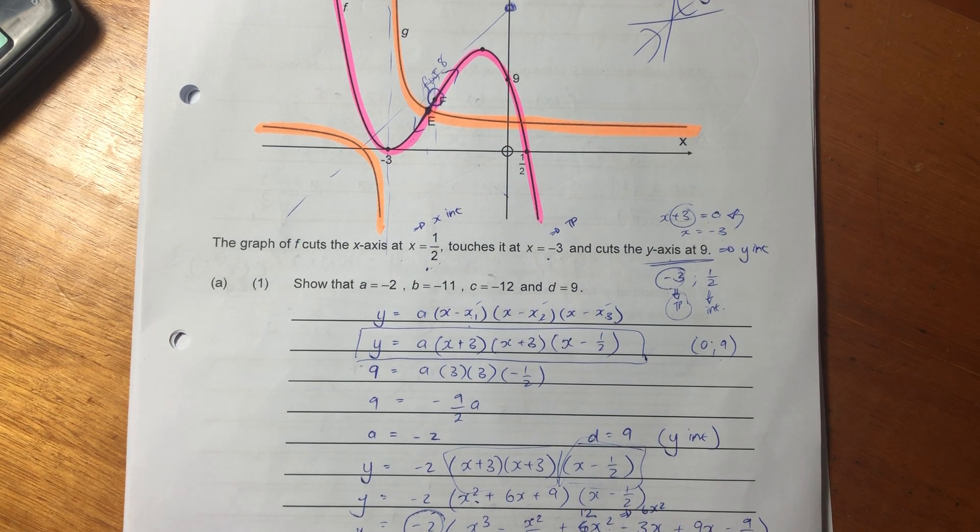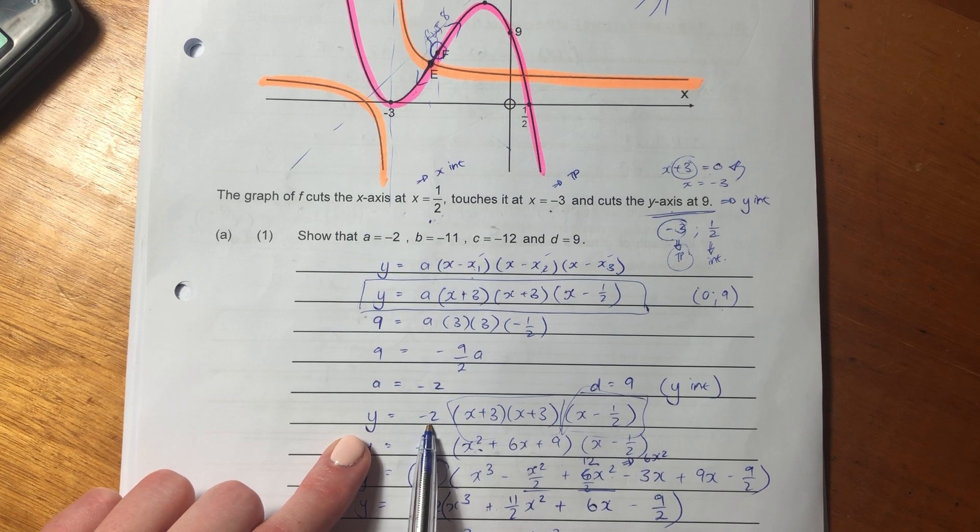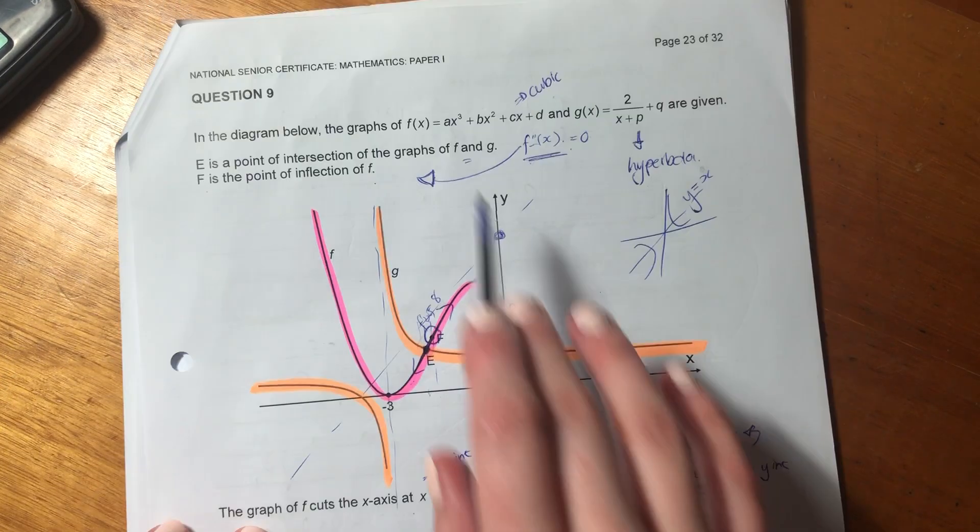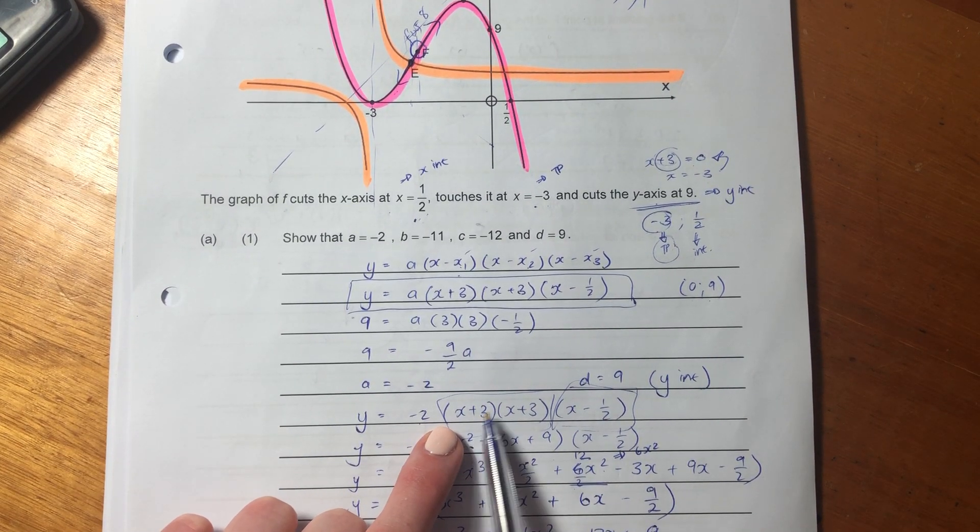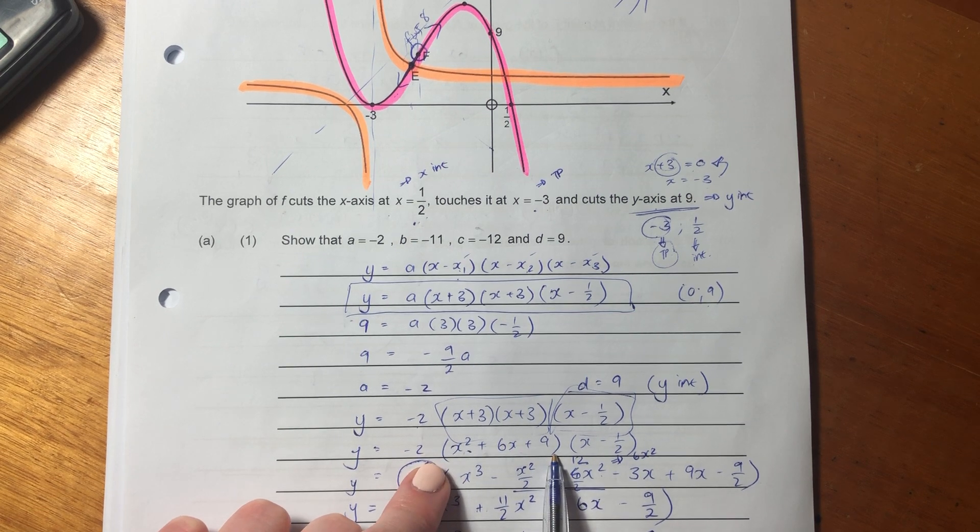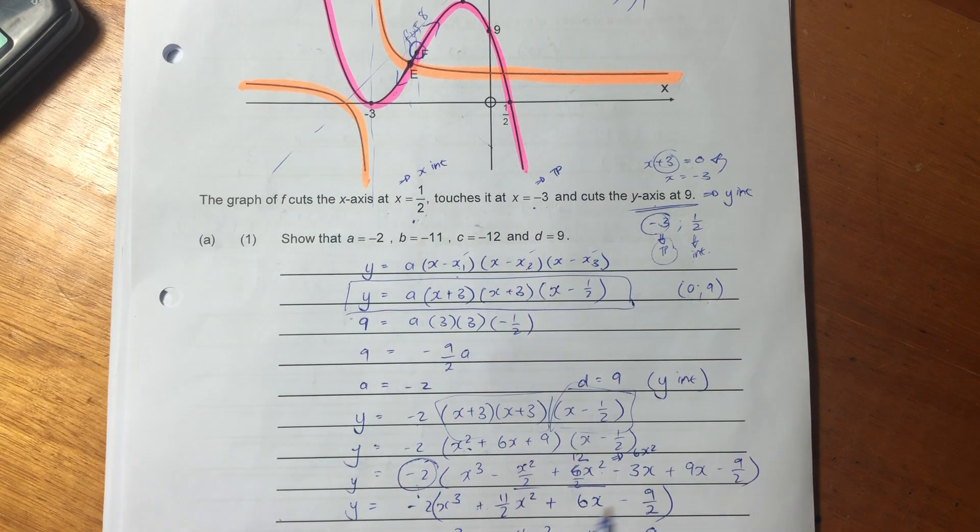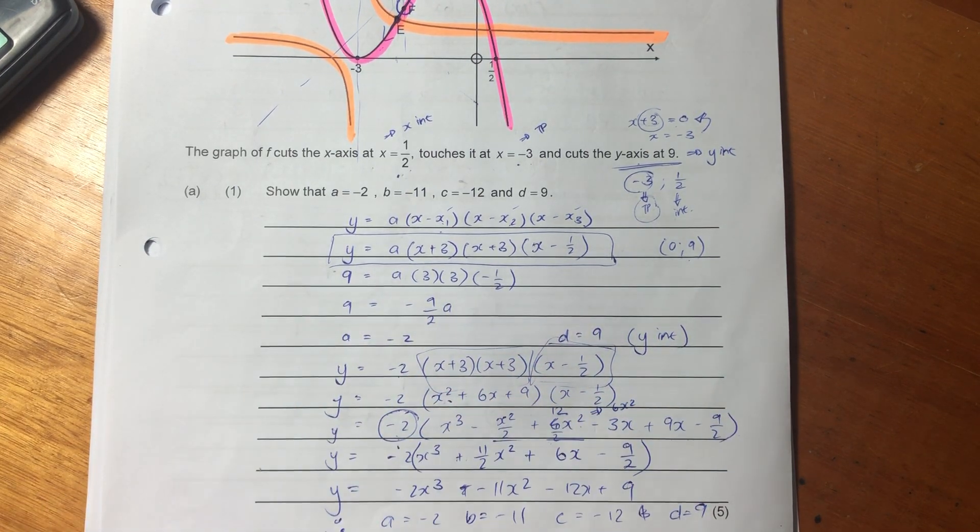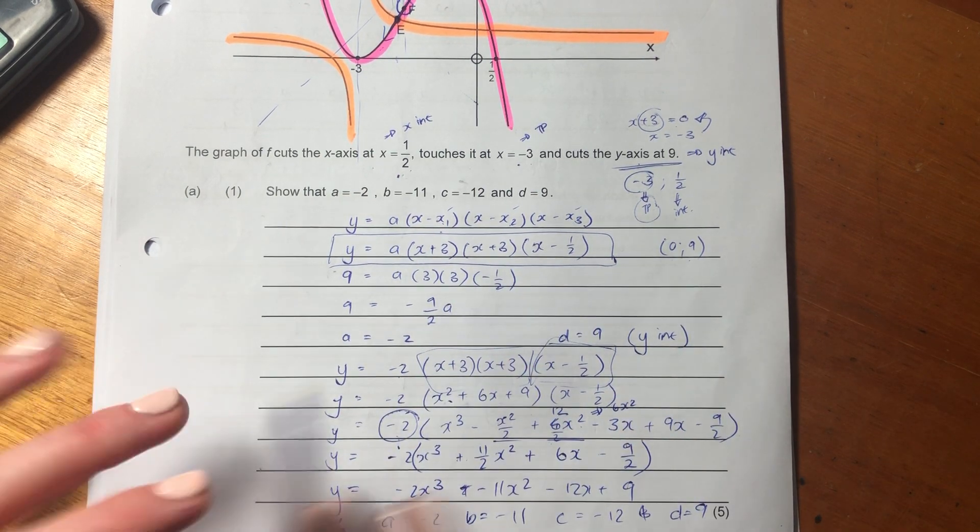And we get a = -2, which is fantastic considering that they asked us to solve for that. So we've got that, and now you could be saying, okay that's all good and well, Margs, but how do we continue? So what we do is we go back to the original form we had, but now we sub in what a is, and all we have to do is expand out and get it into a cubic form that looks like this, and then we can get all the different unknowns.